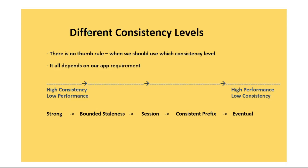Now let's discuss the different consistency levels. There is no thumb rule for which consistency level to use — it all depends on our app requirement, that is, how strong a consistency level our app needs. We have five consistency levels: strong, bounded staleness, session, consistent prefix, and eventual.